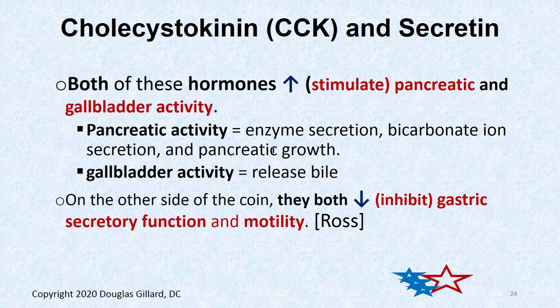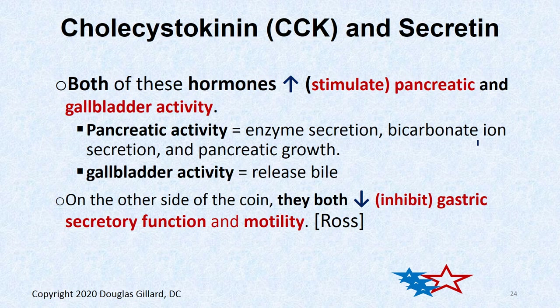Both CCK and secretin target the pancreas and gallbladder — they stimulate the pancreas to release enzymes and bicarbonate, stimulate gallbladder to release bile, promote pancreatic growth, and release bile from the gallbladder. These hormones get right into the bloodstream to travel. On the other side, they can travel up to the stomach and inhibit gastric secretion and motility. CCK I-cells live in the duodenum and jejunum; secretin S-cells live in the duodenum as well.